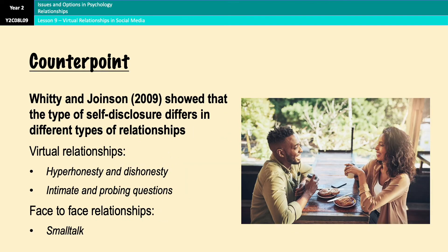However, there is a counterpoint. Despite the evidence just presented, there is some support for the idea that face-to-face and virtual relationships differ in the type of self-disclosure used. Research from 2009 summarizes evidence showing how self-presentation is manipulated in virtual relationships — for example, questions in online discussions tend to be very direct, probing, and intimate, and people often invent attractive qualities for their online dating profiles. This is very different from face-to-face conversations, which generally involve small talk and little steps of getting to know someone, rather than intense hyper-honesty or hyper-dishonesty. This finding supports the hyper-personal model's claims and shows a clear difference between face-to-face and virtual interactions.